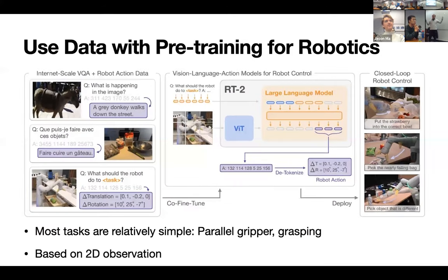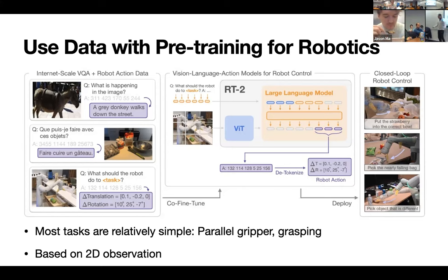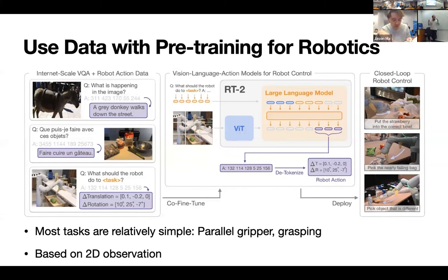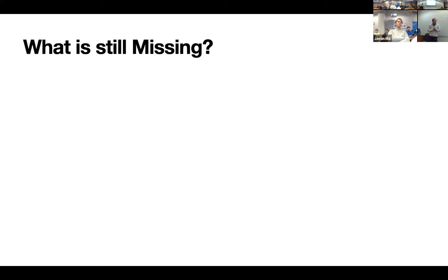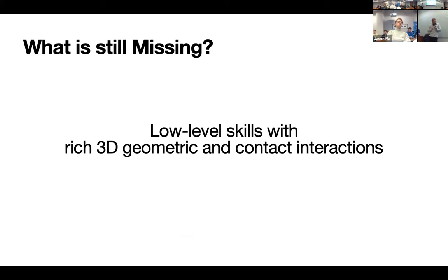Let's take a closer look at the RT2 approach. If you look at the tasks it's actually performing, we're still using a parallel gripper to do pick-and-place most of the time. For this kind of task, you only need 2D input — training ViT transformers on top of 2D observations. A lot of the bottleneck is still in learning low-level skills which require rich 3D geometry and contact reasoning.